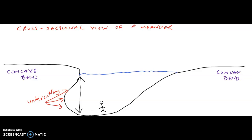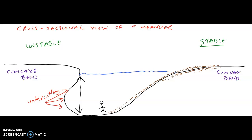On the convex bank, the convex bank is a little bit unique — it is associated with deposition of materials. This side is associated with more deposition of materials, and the flow of water is slower on this side. Now, class, if deposition is dominant, that means this area will be associated with a greater degree of stability. So the region on the concave bank is unstable, whereas on the convex bank it is said to be relatively stable. The concave bank is associated with unstable characteristics, whereas the convex bank is associated with stable characteristics.